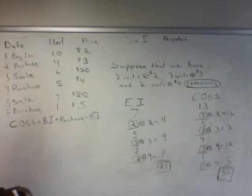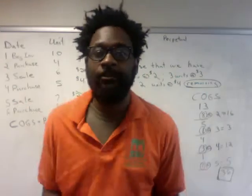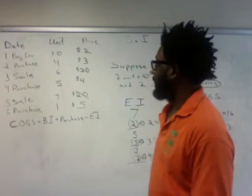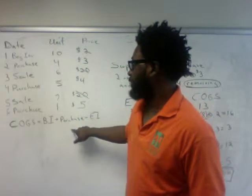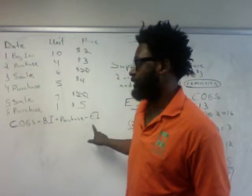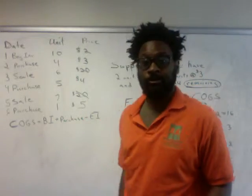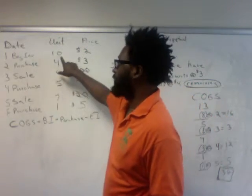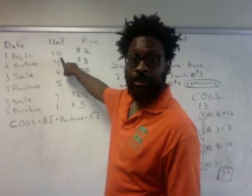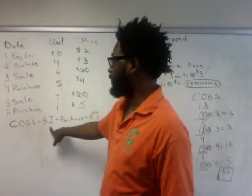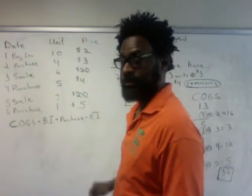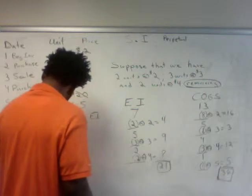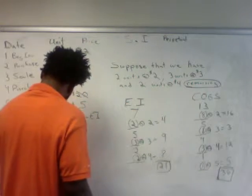We can use this cost of goods sold formula to back into and verify that everything is correct. You're simply plugging in the cost information to equal cost of goods sold. For example, beginning inventory: 10 units at $2 equals $20.